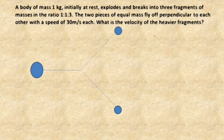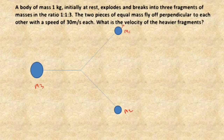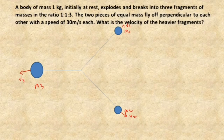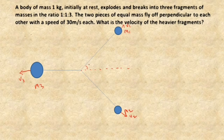All the values are given. The three fragments are labeled m1, m2, and m3. m1 is moving with velocity v1, m2 is moving with velocity v2, and m3 is moving with velocity v3. Each has momentum — m1v1 is a momentum vector. We can resolve this momentum vector into two components.